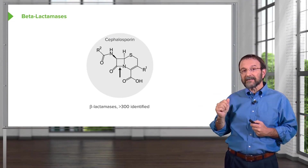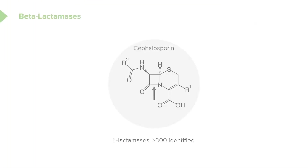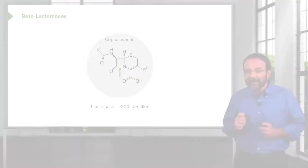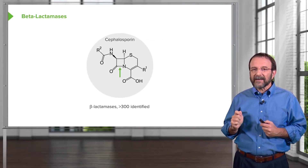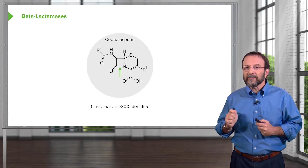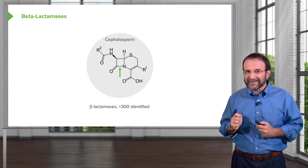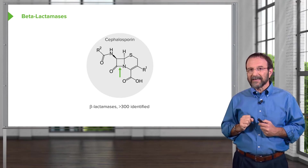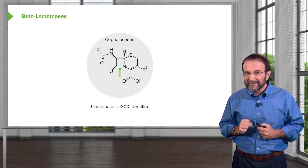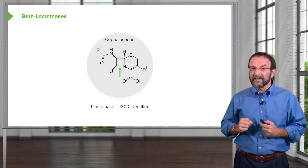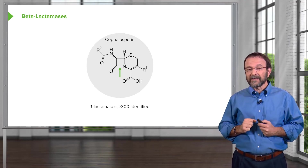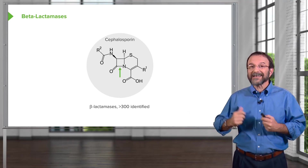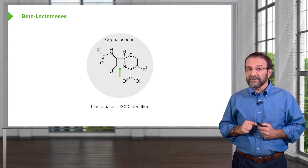Going back to our beta-lactam antibiotics — the arrow points to the beta-lactam ring, which is common to all members of this class. We have so far identified over 300 beta-lactamases. These are enzymes that cut the beta-lactam ring, and these beta-lactamases encode resistance to the beta-lactam antibiotics. You can see the extent of the problem — beta-lactamases are everywhere.